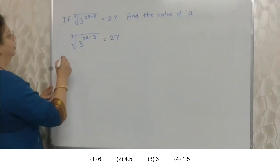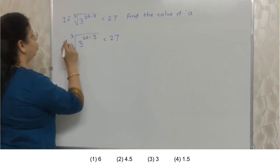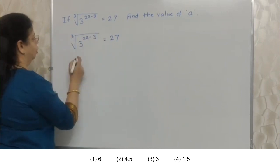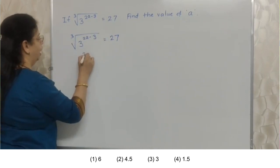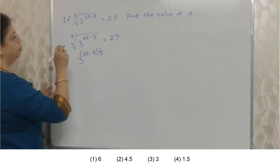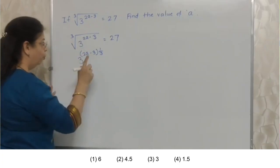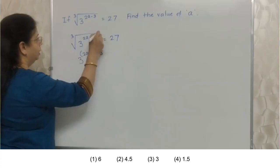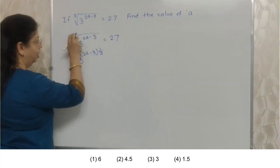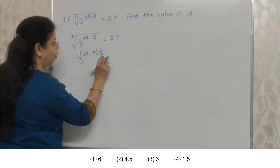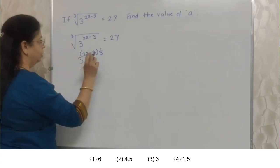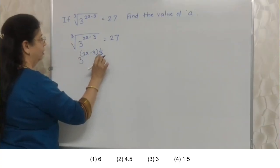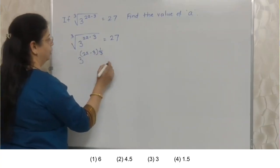Now, this is cube root of this. So we need to write it like this. Cube root is 1 upon 3. Cube is 3. Please be careful here. When the number is 3 here, means it is 1 upon 3 and not 3.